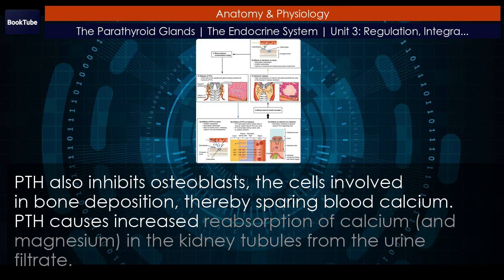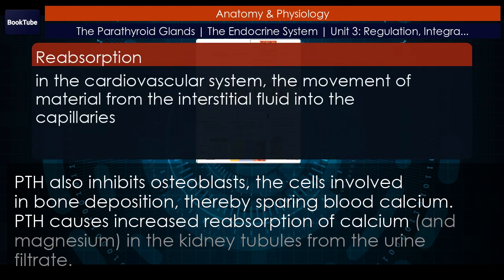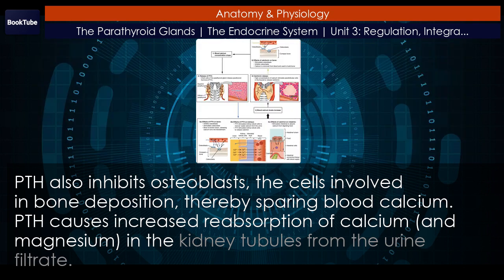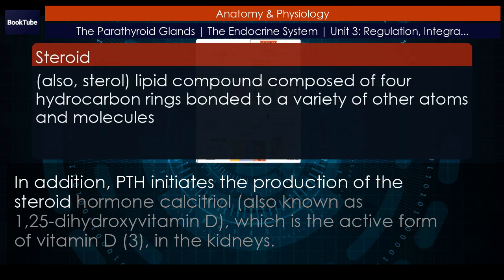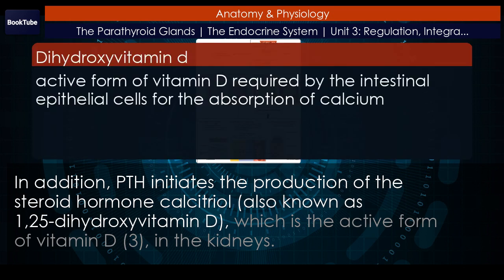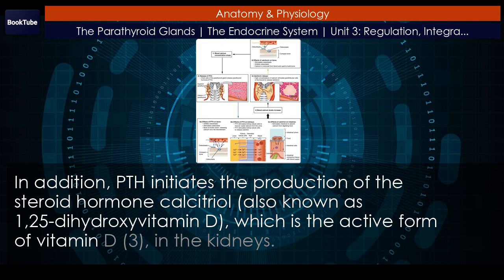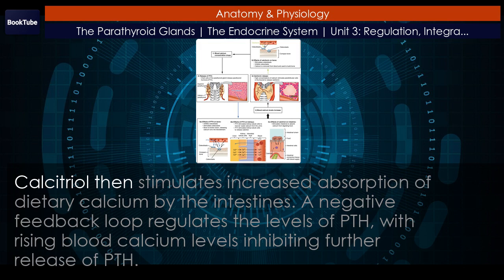PTH causes increased reabsorption of calcium and magnesium in the kidney tubules from the urine filtrate. In addition, PTH initiates the production of the steroid hormone calcitriol, also known as 1,25 dihydroxyvitamin D, which is the active form of vitamin D3. Calcitriol then stimulates increased absorption of dietary calcium by the intestines.